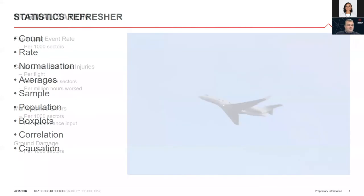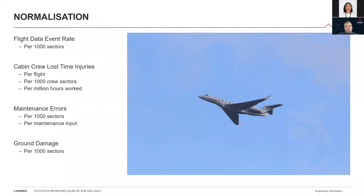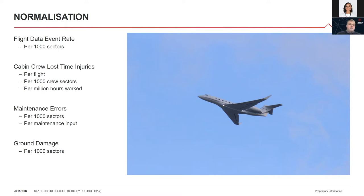If you're a large operator, your total number of events is not a direct comparison to a smaller operator. If you're British Airways flying many thousands of flights, you'll have many more landings, so your count is not directly comparable to a smaller regional operator. That's why we talk about event rates rather than event counts. In Flight Data Connect, your event rate is simply how many of that event you'd have per thousand flights — so if you only have 100 flights, multiply your count by 10; if you have 100,000 flights, divide your count by 100. We do this to normalize the data and enable broad comparison against other operators.